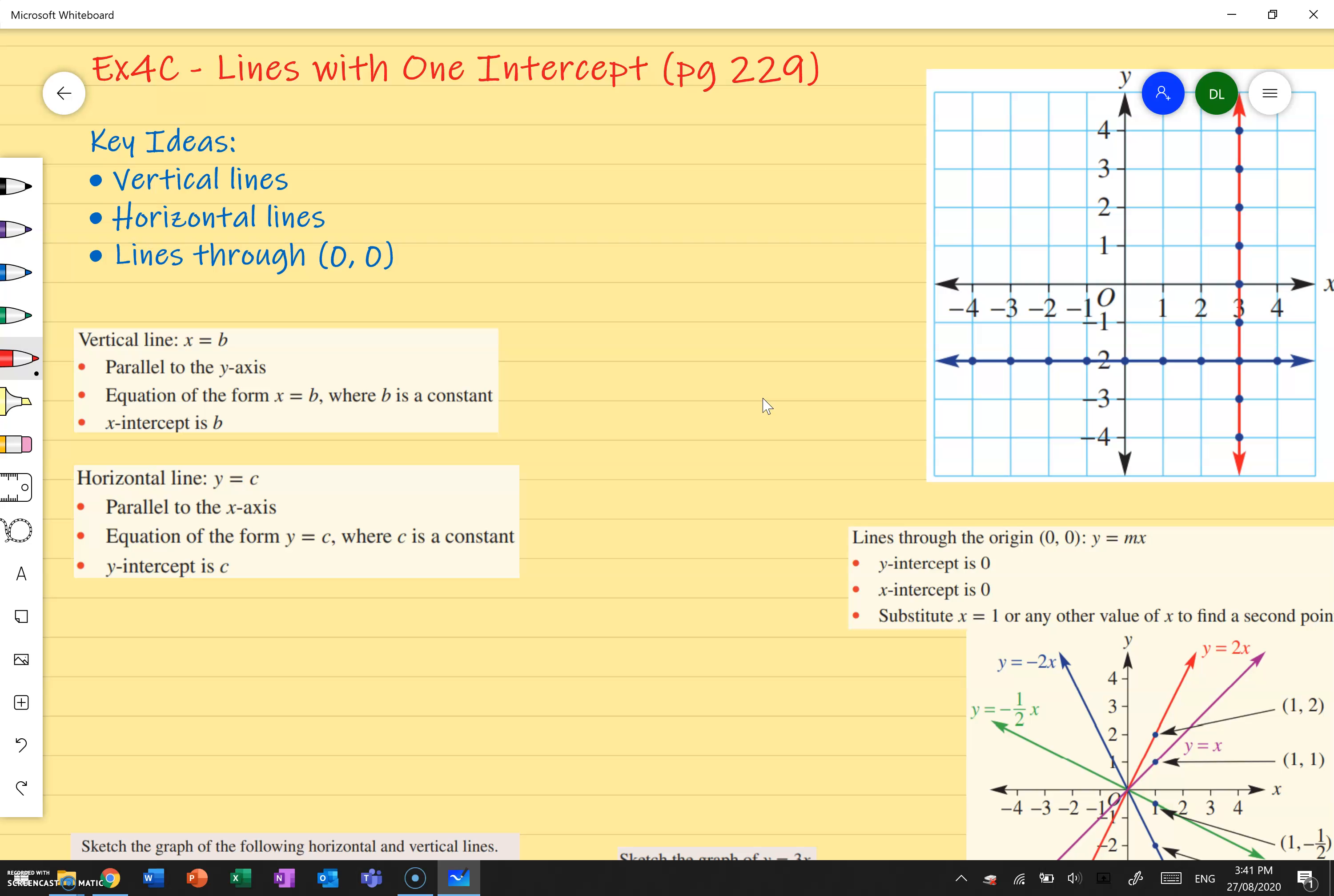But sometimes we'll actually end up with a line that only has one intercept, whether that's a single x-intercept and no y-intercept, or a y-intercept and no x-intercept, or the x and y-intercept being the same value.